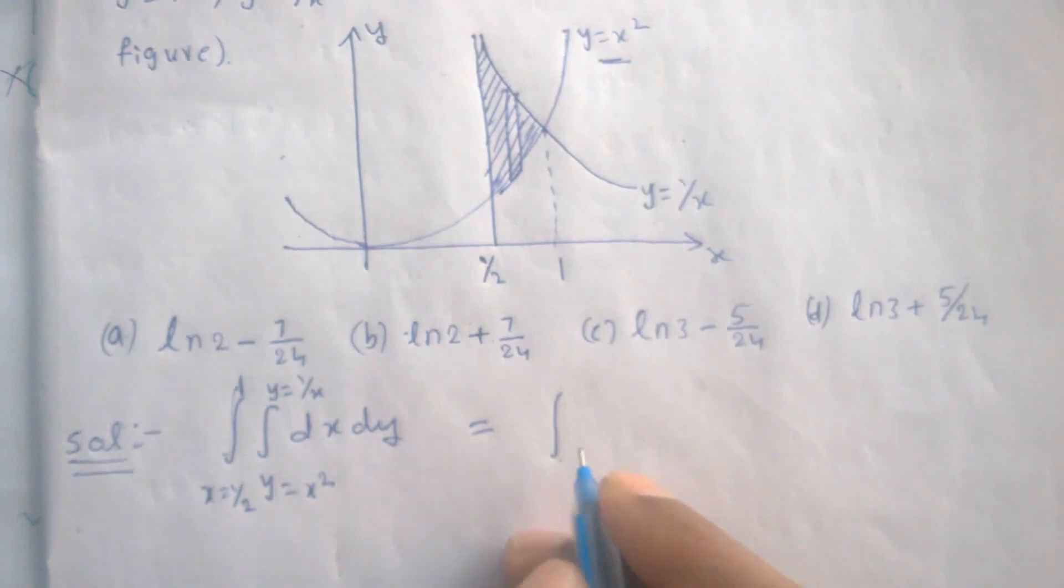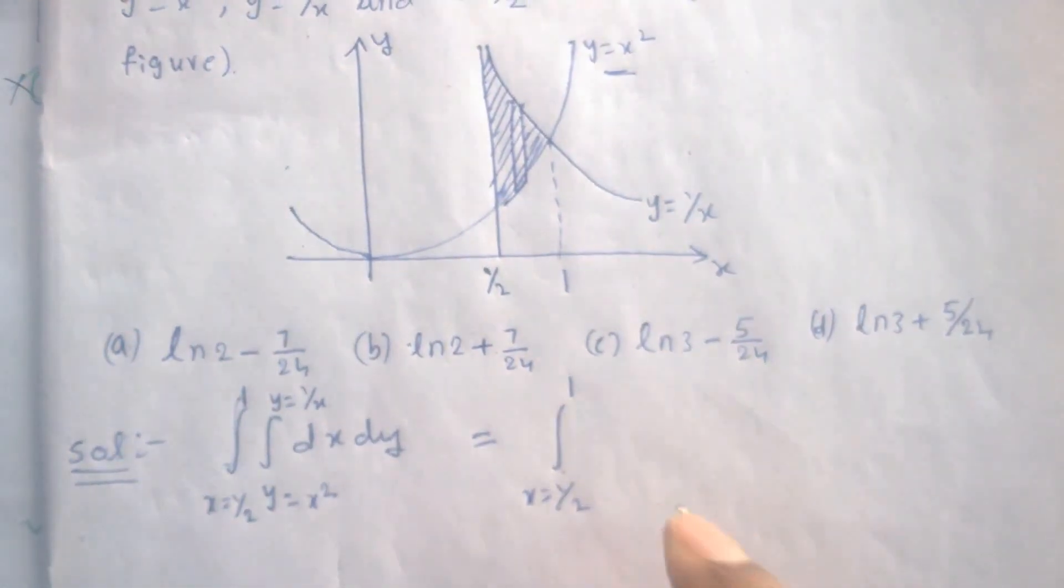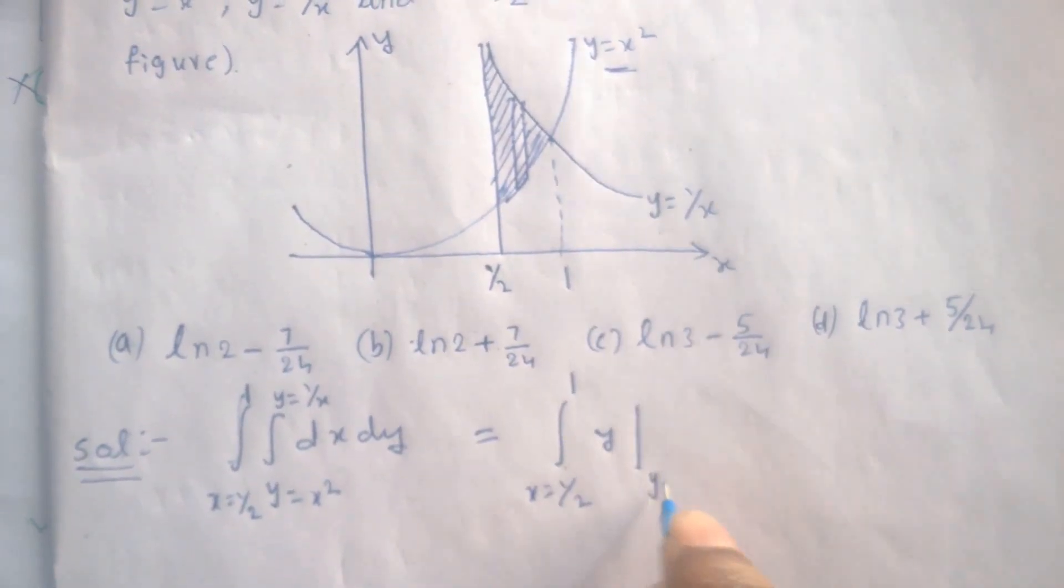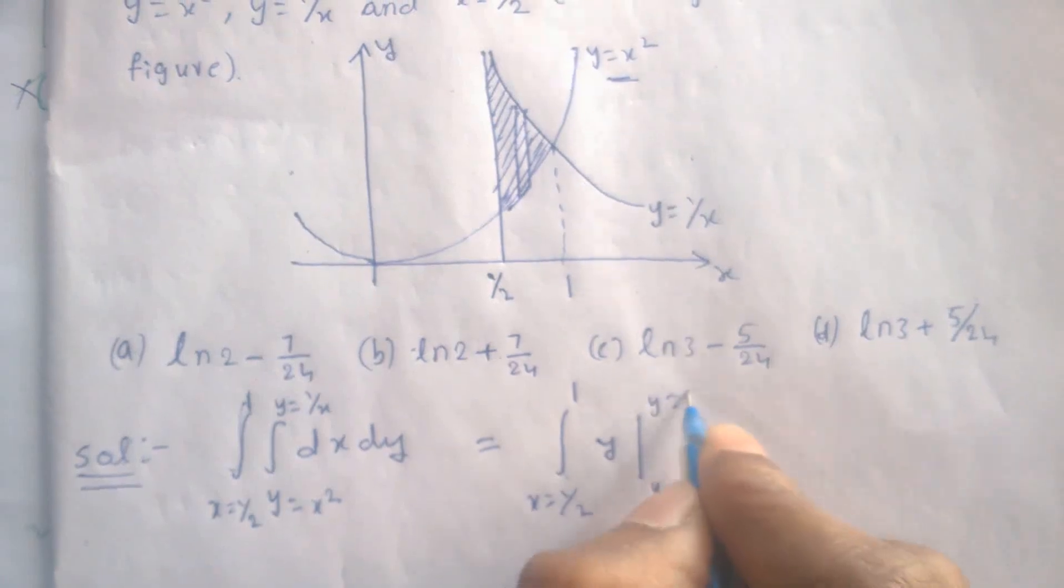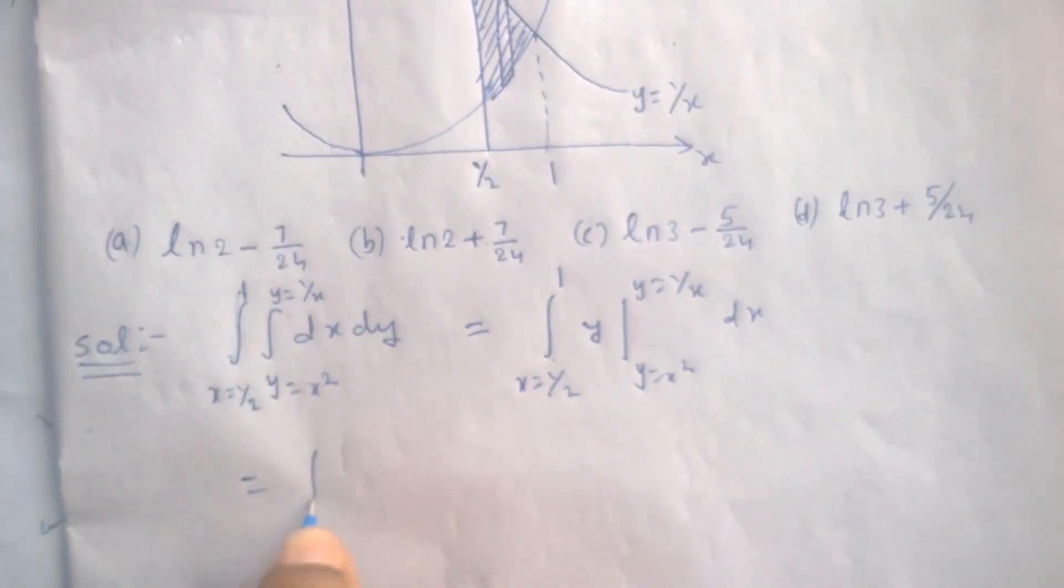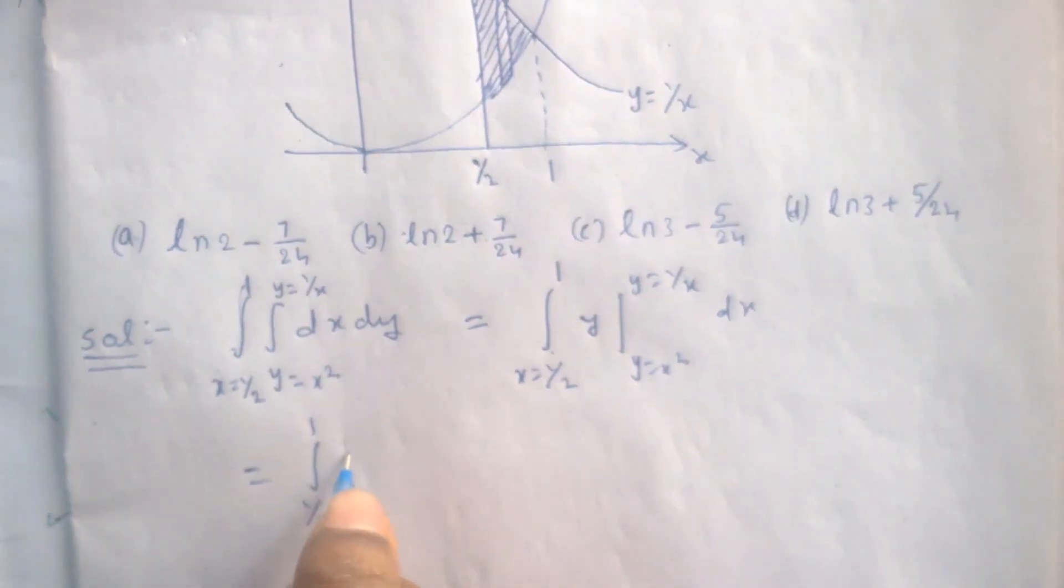Now by solving this, we are going to obtain—first we have to integrate with respect to y. Here x equals 1 by 2 to 1, and we integrate with respect to y, we are going to get integral from 1 by 2 to 1 of (1 by x minus x square) dx.